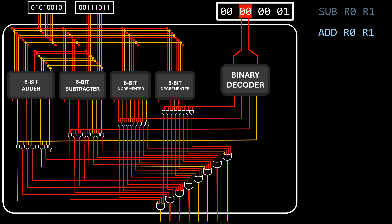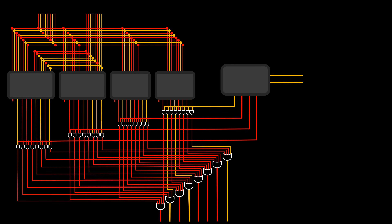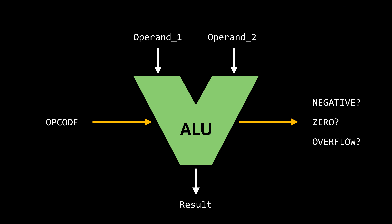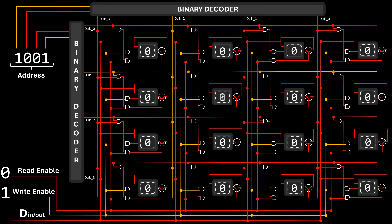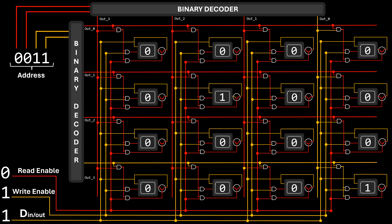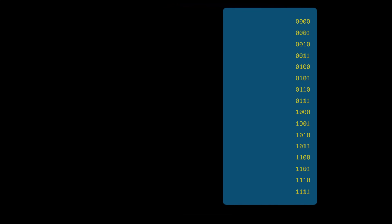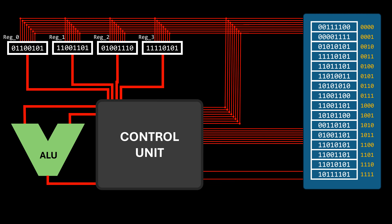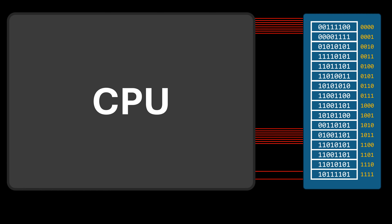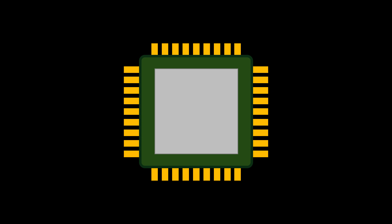Transistors are very simple by themselves, but combining them results in very powerful components, like arithmetic logic units capable of doing math, and latches capable of retaining information to create memory. In today's video, we are going to use these components to create our own CPU, so we'll finally understand how a piece of silicon runs programs.